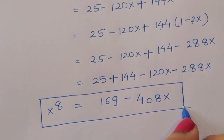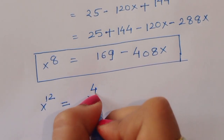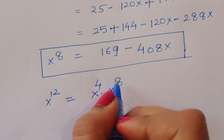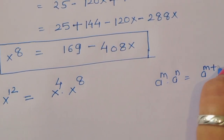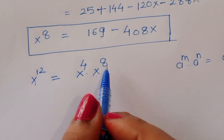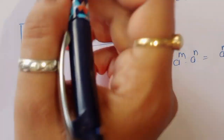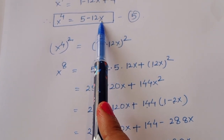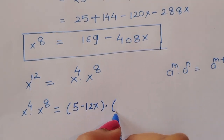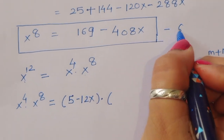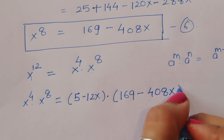We need x^12, and we can write x^12 = x⁴ · x⁸, since 4 + 8 = 12, using the formula a^m · a^n = a^(m+n). From equation 5, x⁴ = 5 - 12x, and from equation 6, x⁸ = 169 - 408x.